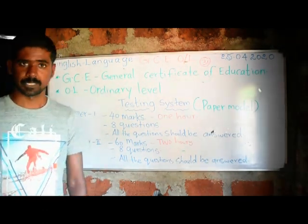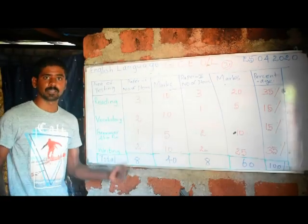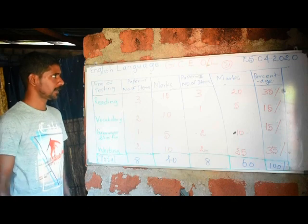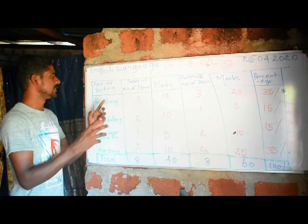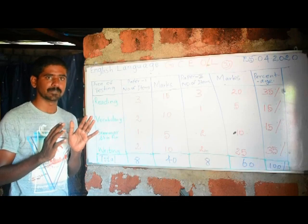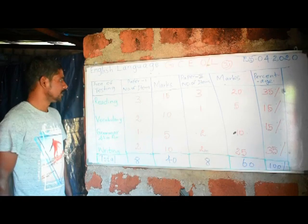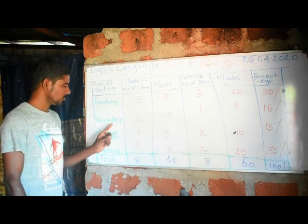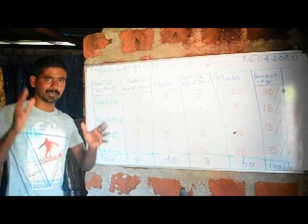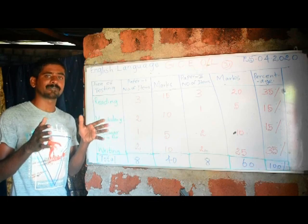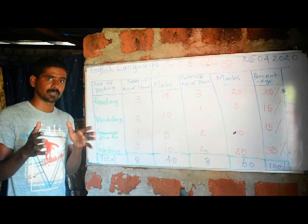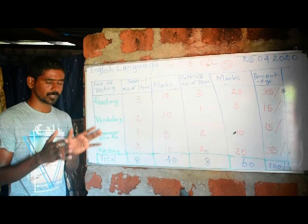Now, let's look at the areas of testing — that means what areas students will be evaluated in. The areas are: reading, vocabulary, grammar and language functions, and writing. These are the areas students have been evaluated on from the beginning.